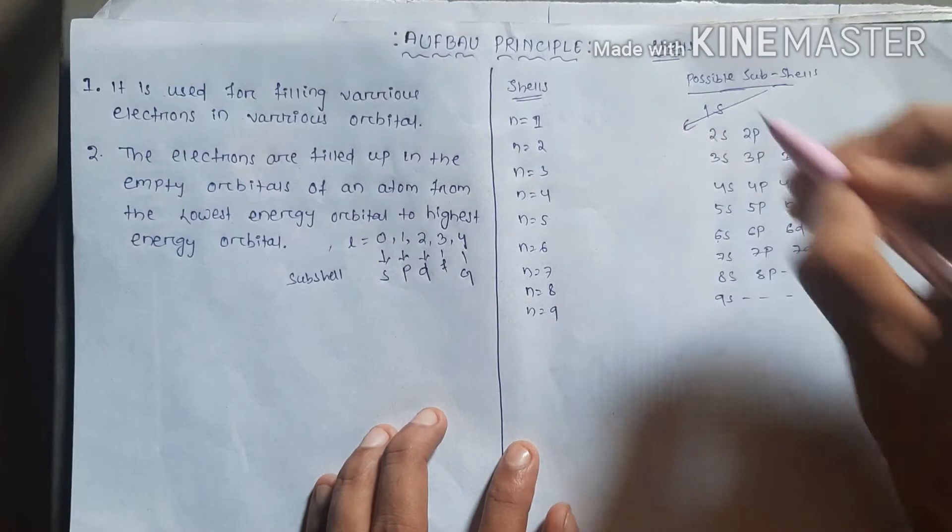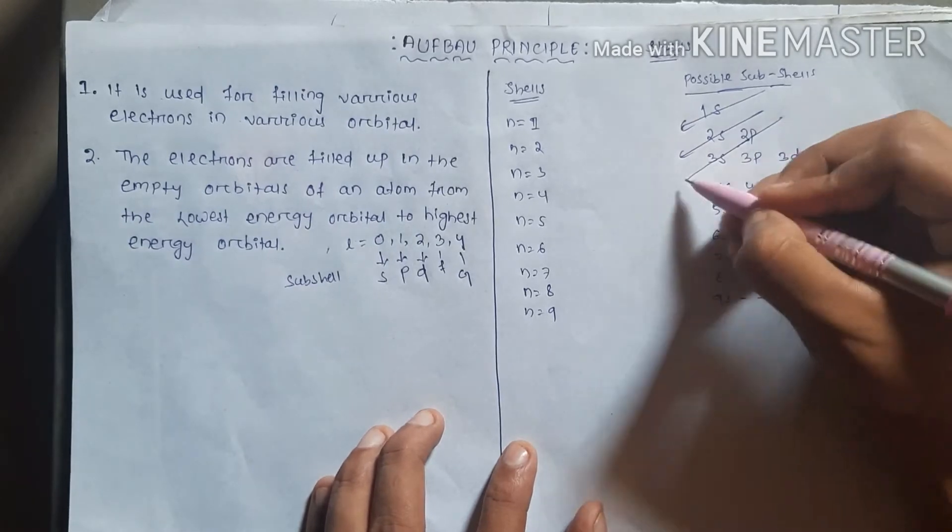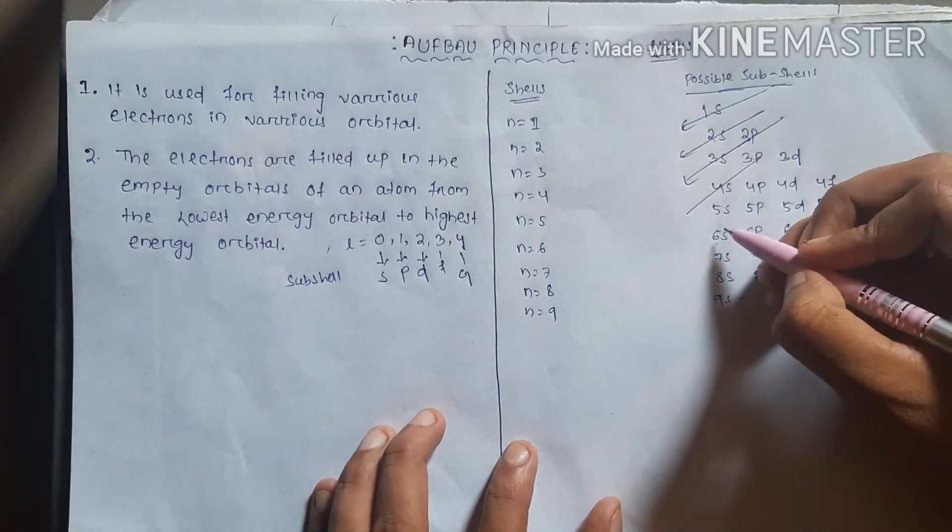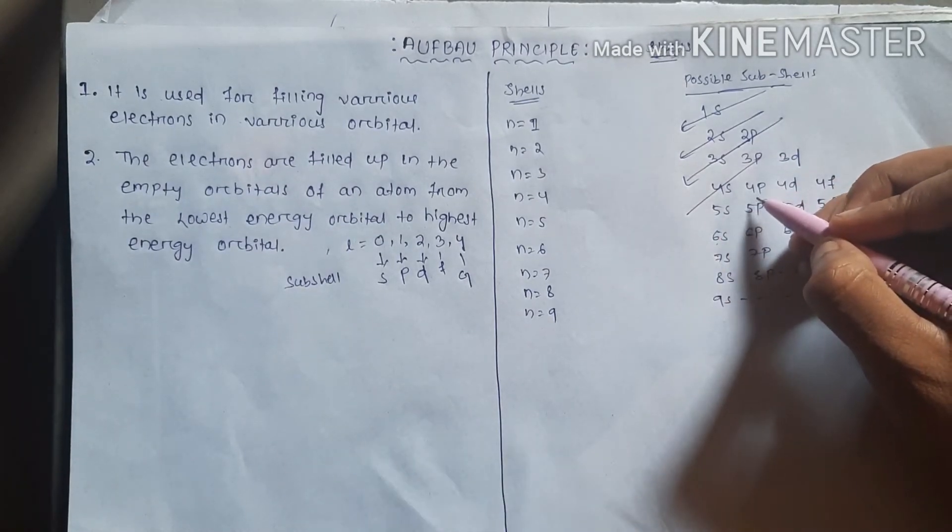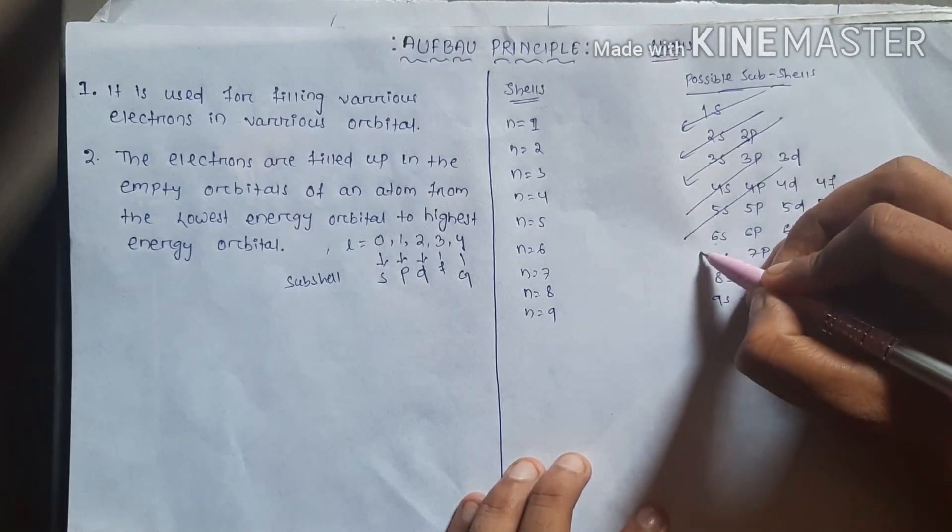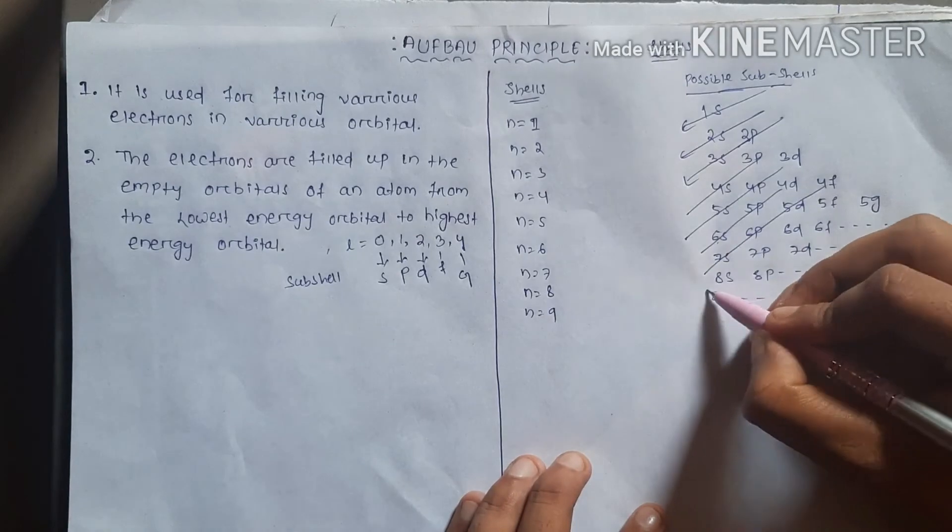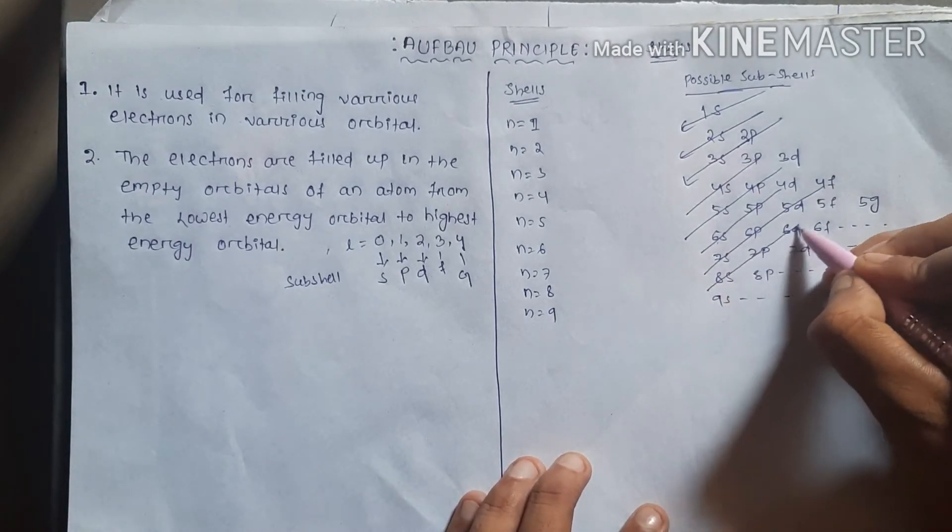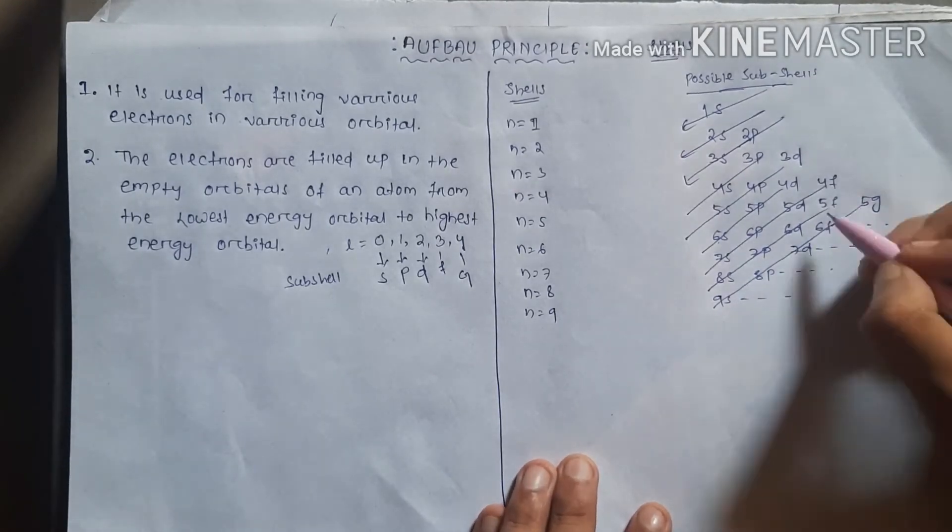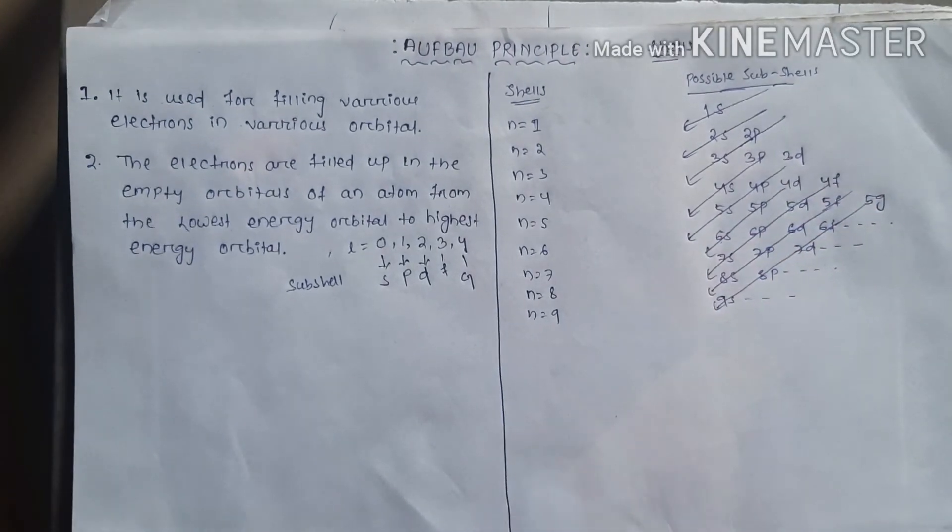First 1S, then 2S, then 2P, then 3S, then 3P, 4S. Then 4S, 5S, 4P, 3D. Then 6S, 5P, 4D. Then 7S, 6P, 5D, 4F. Then 8S, 7P, 6D, 5F. Then 9S, 8P, 7D, 6F, 5G. Electron fill up occurs in this way in various possible subshells.